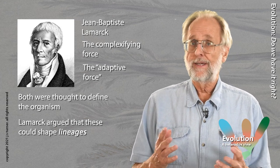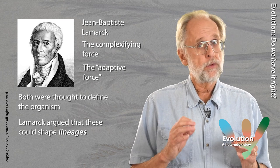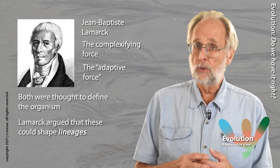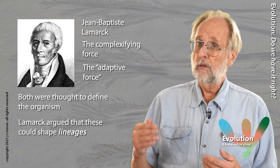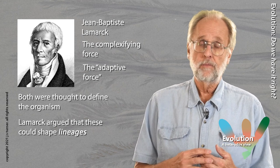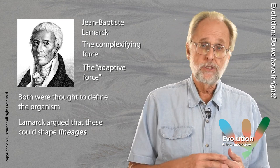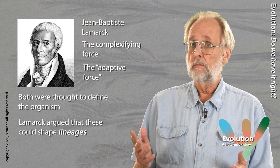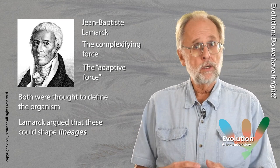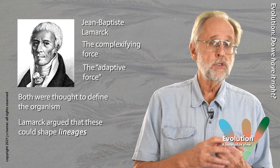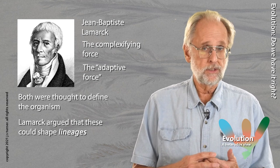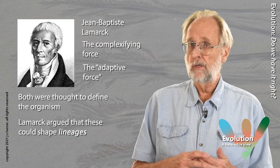In this way, changes, whether complexifying or adaptive, that occurred within the lifetime of an individual organism, could be built upon through the generations. And in this way, lineages would change through time. They would become steadily more complex, and they would become ever more closely adapted to circumstances. In other words, they would evolve.